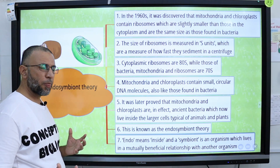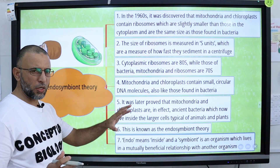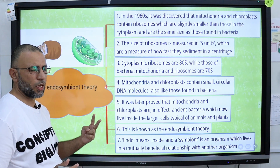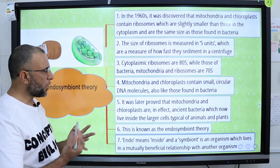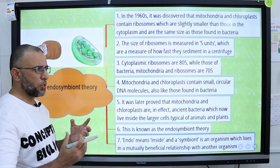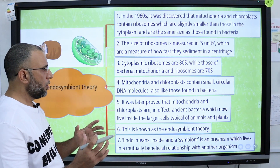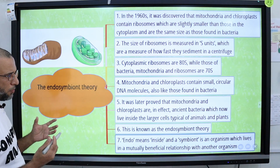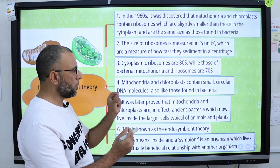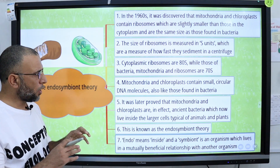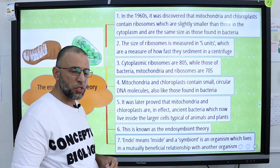Mitochondria and chloroplasts have their own DNA. While DNA is normally present inside the nucleus, these two cytoplasmic structures have their own DNA. Due to the presence of bacterial ribosomes and DNA, and the similarity between the mitochondrial matrix and bacterial cytoplasm, it is suggested that bacteria evolved into mitochondria. Thus, mitochondria and chloroplasts are actually evolved from bacteria — as explained by the endosymbiont theory.